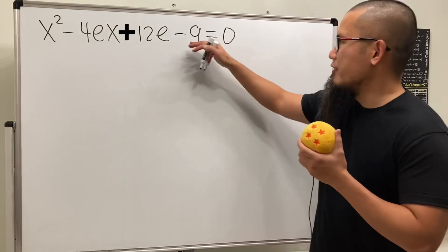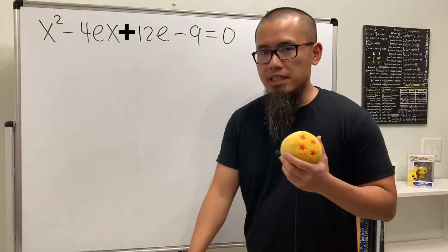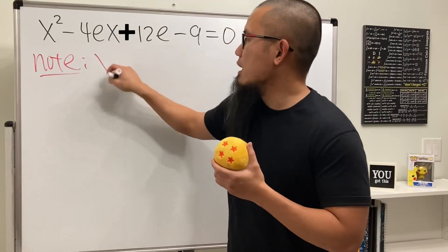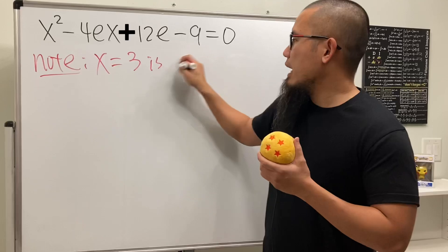Have a look right here because we have negative 9, just kind of guess and check. It's easy to see that x equals 3 is a solution. So let me just write it down right here for you guys. x equals 3 is a solution.